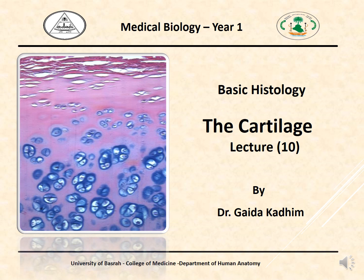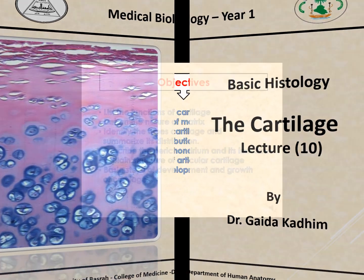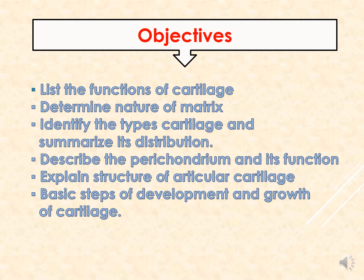Assalamu alaikum warahmatullahi wabarakatuh. We are going to be studying cartilage. The main objectives for this lecture include: list the functions of cartilage, determine the nature of matrix, identify the types of cartilage and summarize its distribution, describe the perichondrium and its function, exhibit the structure of articular cartilage, and the basic steps of development and growth of cartilage.